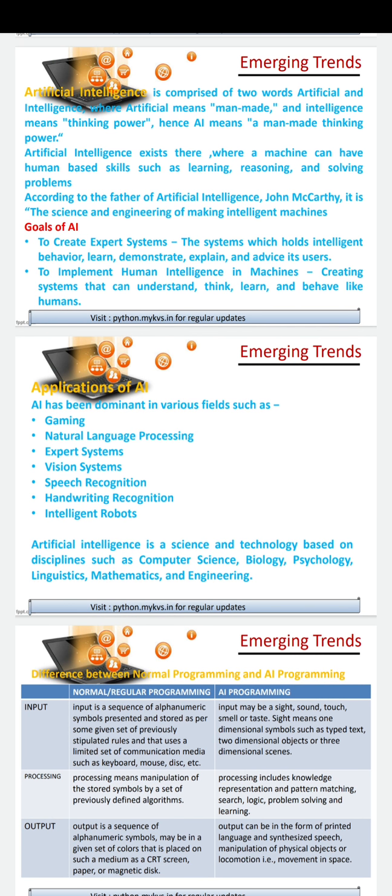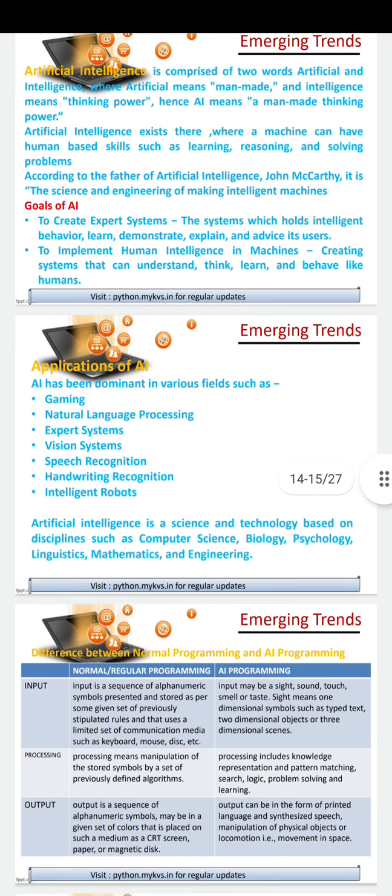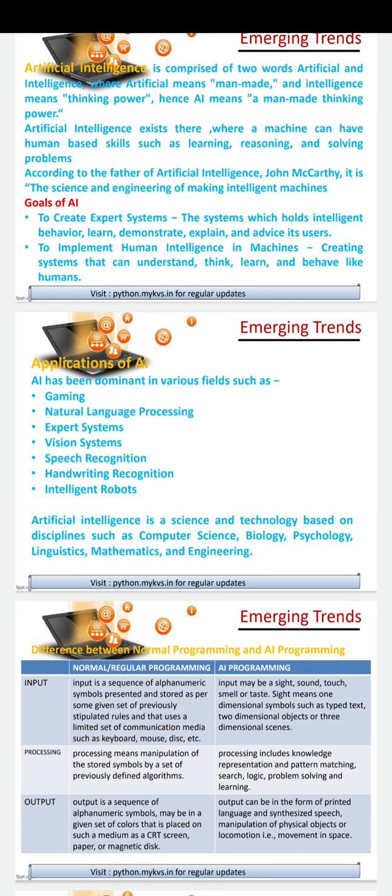There must be some goals for why we make artificial intelligence. First, we will make our daily human life easy. The goals of AI include: to create expert systems that can demonstrate, explain, and advise its users. Second, to implement human intelligence in machines, creating systems that can understand, think, learn, and behave like humans.